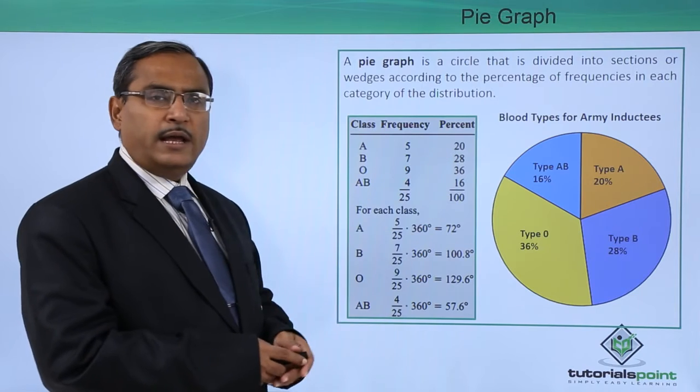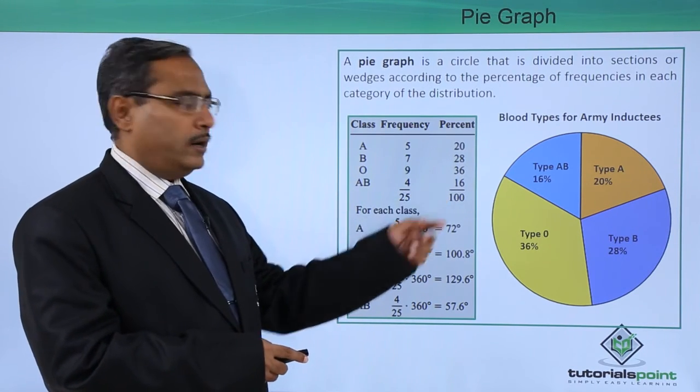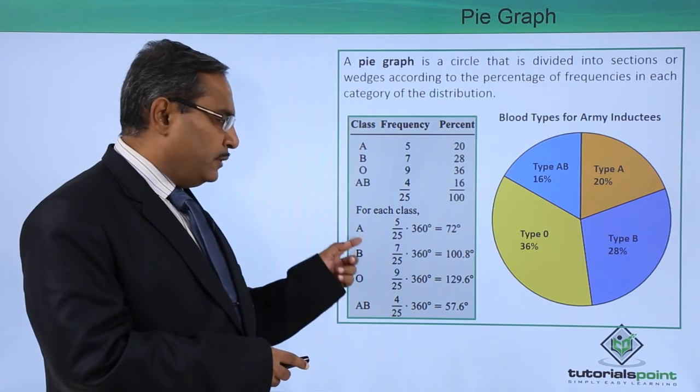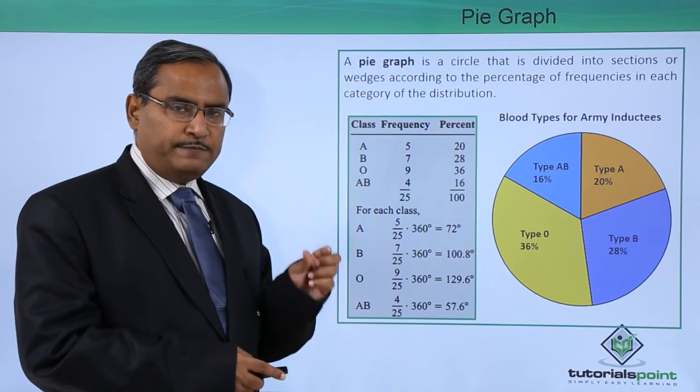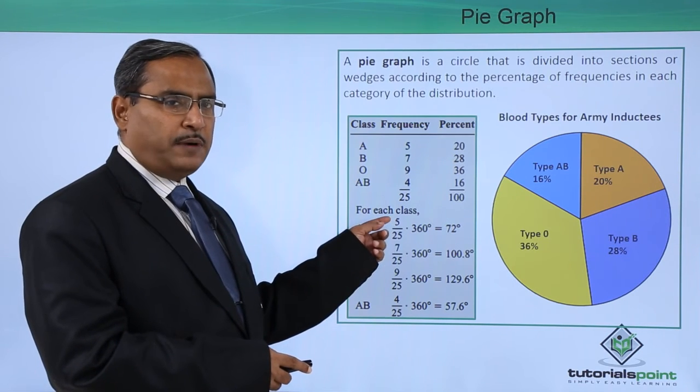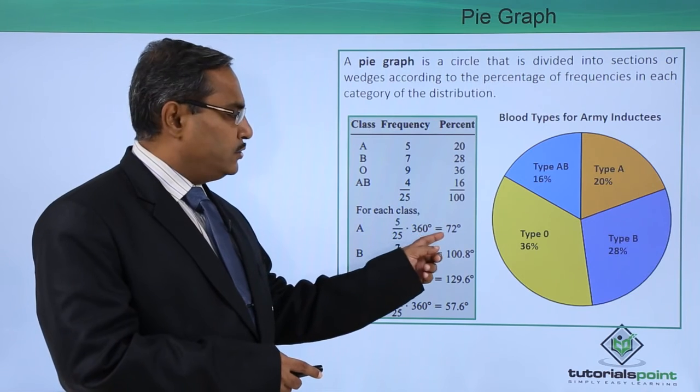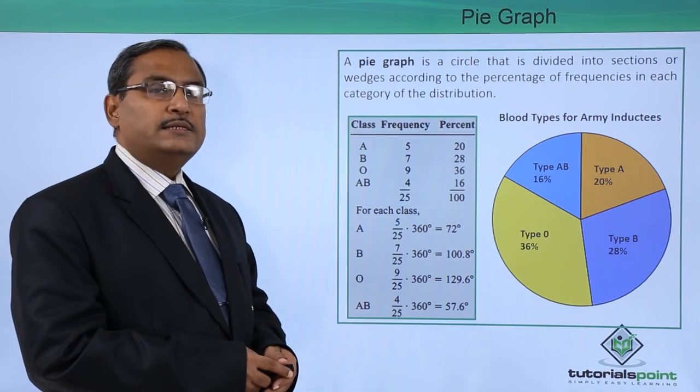We are getting this one as 20. In this way the percentage frequency sum will be 100. If I want to calculate the respective degree for each category, it will be 5 by 25 into 360 degrees. Here you are going to get 72 degrees.